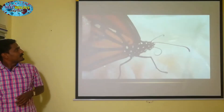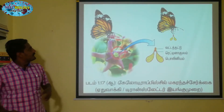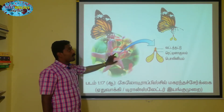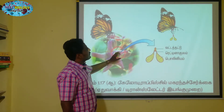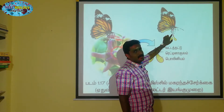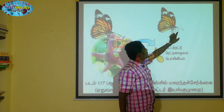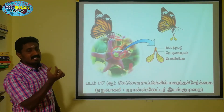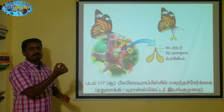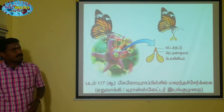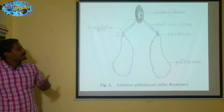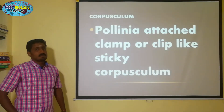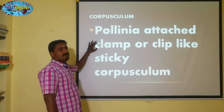Butterfly — star shape, the color. Its star shape. So you can use the clip. That's easy. That's the clamp or clip-like corpus column.